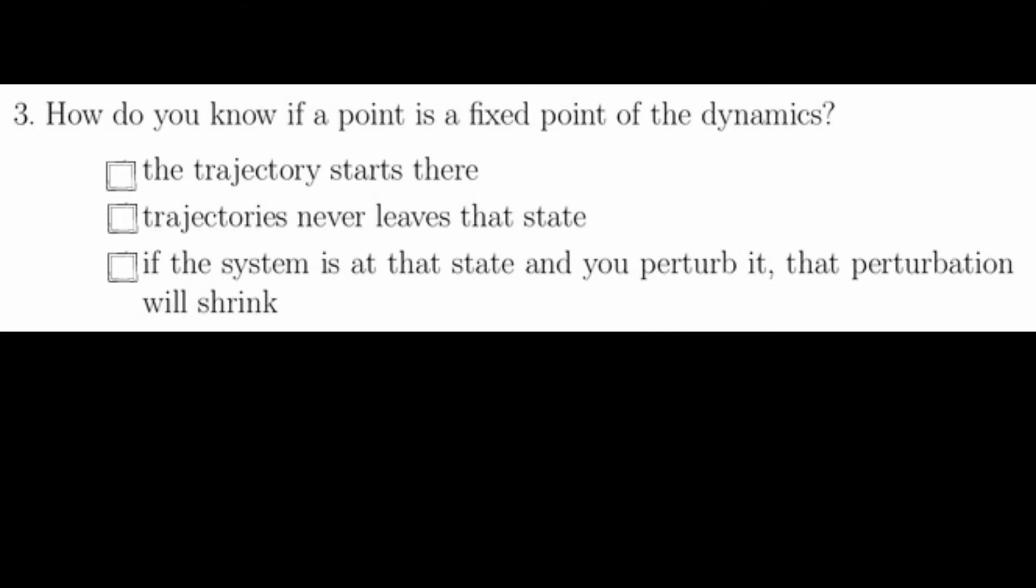Question three asks us which one of these would let us know that we're at a fixed point of a dynamical system. The last option, if the system is at that state and you perturb it, that perturbation will shrink, is a characterization of stability. While stability conditions are often associated with fixed points, that is not the definition of a fixed point. So this condition is not sufficient to let us know that we're at a fixed point of a dynamical system.